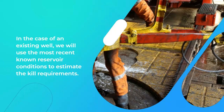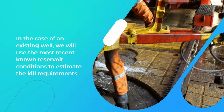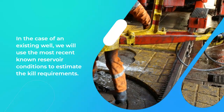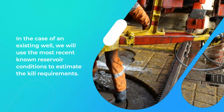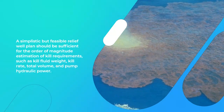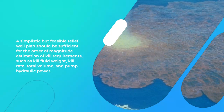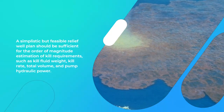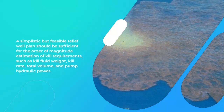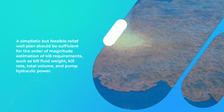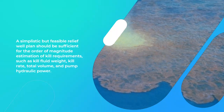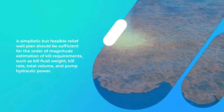In the case of an existing well, we will use the most recent known reservoir conditions to estimate the kill requirements. A simplistic but feasible relief well plan should be sufficient for the order of magnitude estimation of kill requirements, such as kill fluid weight, kill rate, total volume, and pump hydraulic power.